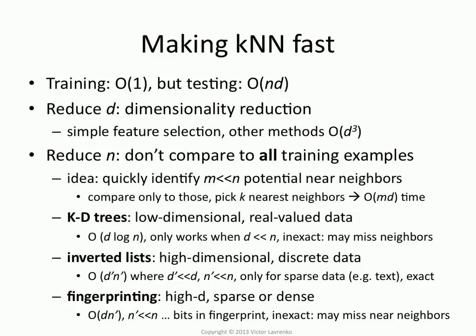How you pick the smaller number of items depends on what kind of data you're dealing with. If you're in continuous low-dimensional space, there's a technique called kd trees, which I'll talk about in the next slide — it reduces complexity, but only works for low d and real-valued data. If you're in a high-dimensional space and your data is sparse and discrete, you want to use inverted lists, which is a totally different technique. There is also a generic technique called fingerprinting that works for many things, but I'm not going to talk about that. KD trees and fingerprinting are approximate, meaning they can miss nearest neighbors, while inverted lists is an exact technique — you're always guaranteed to get your nearest neighbors.